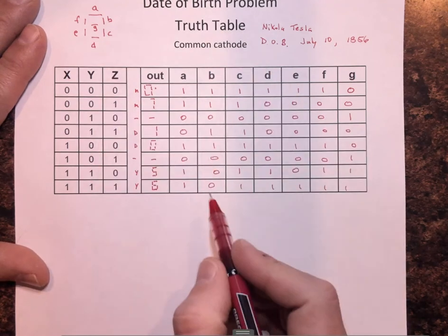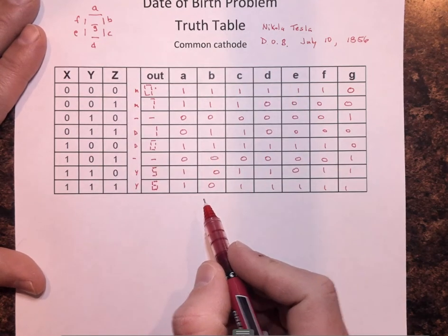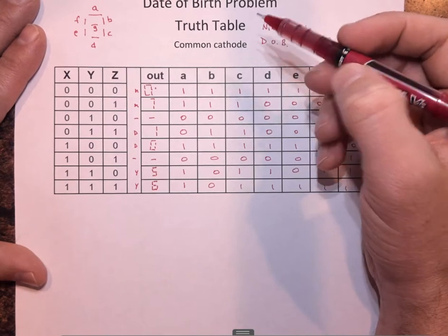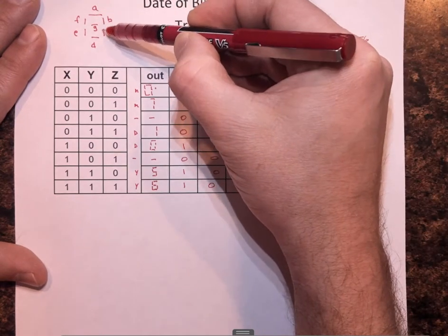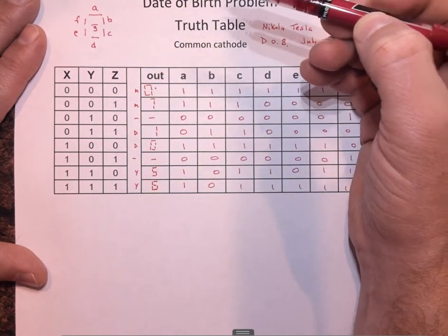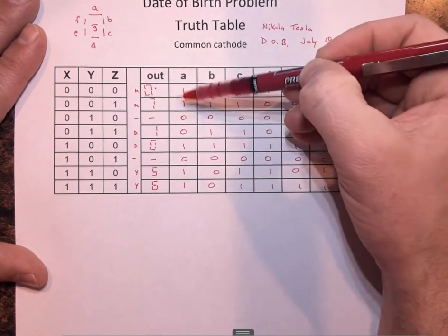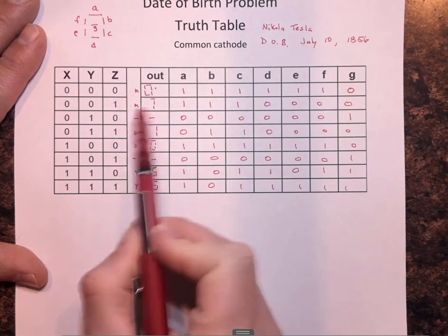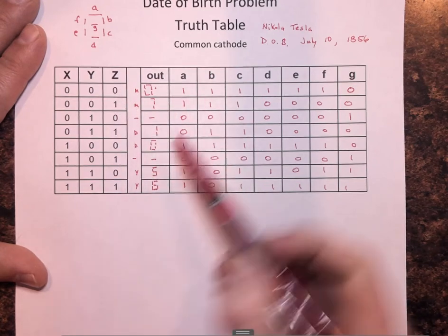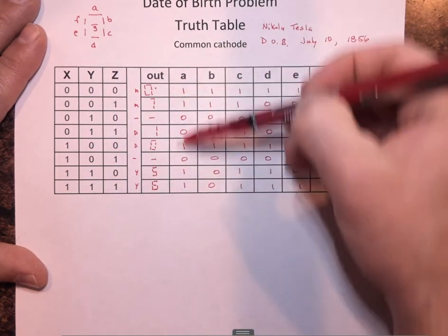Okay, part two after completing the truth table is to create the K-maps for each individual LED light in your seven segment display. So every LED has to know when it's going to turn on or off. So we're no longer looking at the outputs kind of in rows, we're looking at one individual LED.